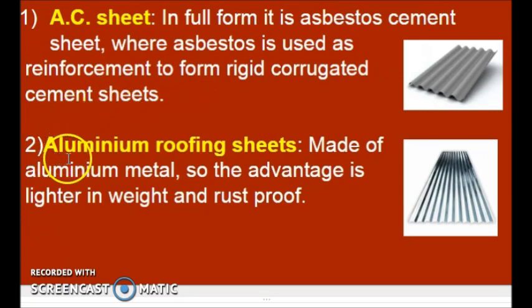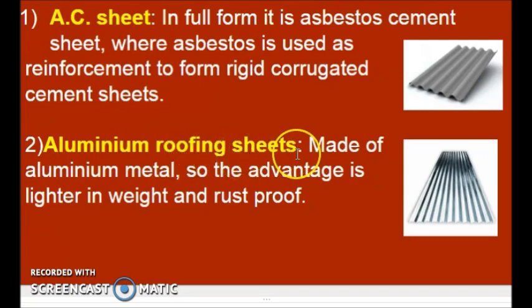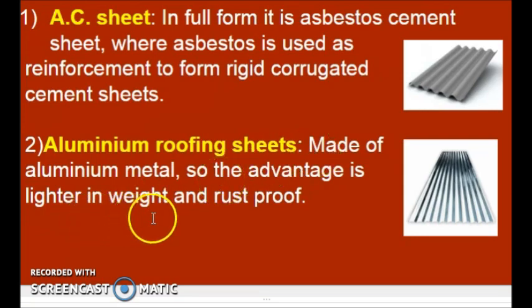Second is Aluminium Roofing Sheets. It is made of aluminium metal. The advantage is it is lighter in weight and rust proof.